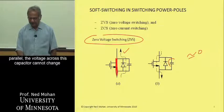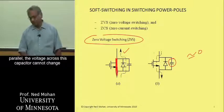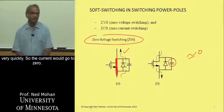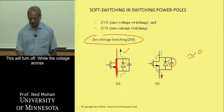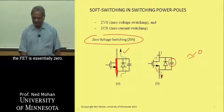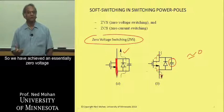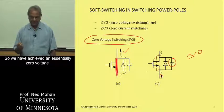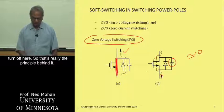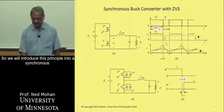if we have this capacitor in parallel, the voltage across this capacitor cannot change very quickly. So the current would go to zero. This would turn off, while the voltage across the FET is essentially zero. So we have achieved essentially zero voltage turnoff here. So that's really the principle behind it.